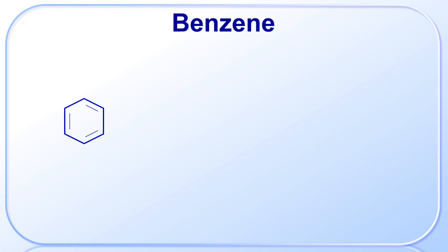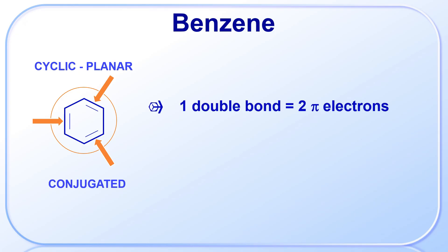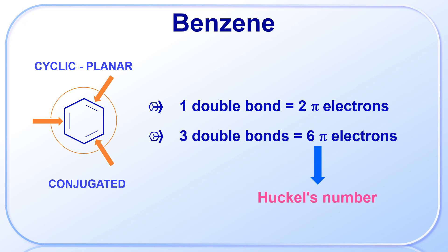The first one is benzene. Benzene is a cyclic, planar compound. It has three alternate double bonds, making the system conjugated, so the pi-electrons can be delocalized in a closed loop. Remember, each double bond contains two pi-electrons. Since there are three double bonds, the total number of pi-electrons is 6, and 6 is a Hückel number. Therefore, benzene is an aromatic compound.